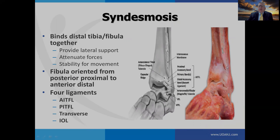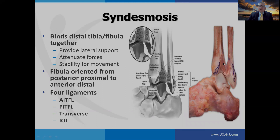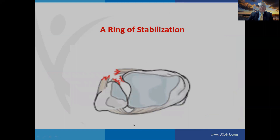The syndesmosis has four main ligaments. On the anterior part, we have the anterior inferior tib-fib ligament. Posteriorly, the posterior inferior tib-fib and the transverse ligament. Within the incisura, at the termination of the interosseous membrane, is the interosseous ligament. The tibia is concave and the fibula is convex within the incisura. There are vessels and nerves which come down into this recess, and it's also filled with cobweb-like ligamentous attachments. All these ligaments together provide a ring of stabilization for the distal tib-fib joint.